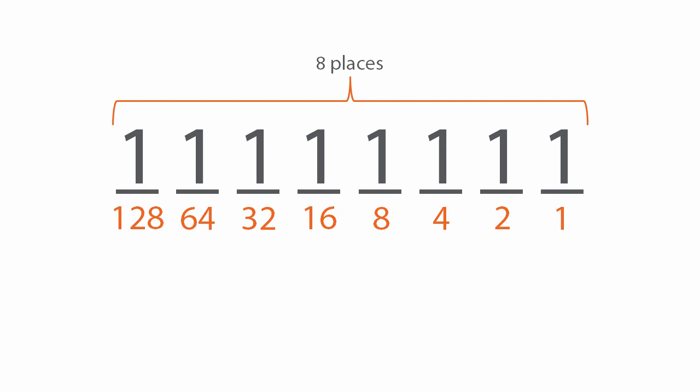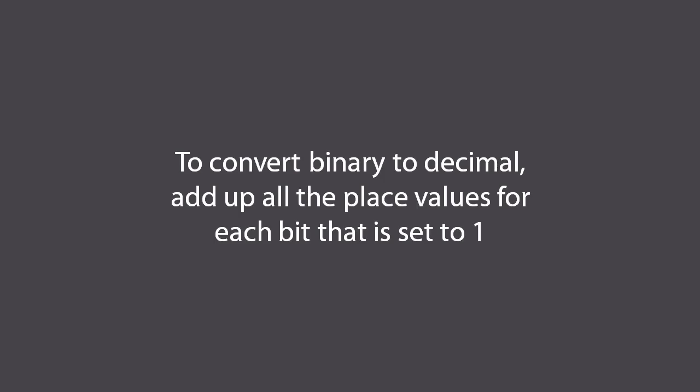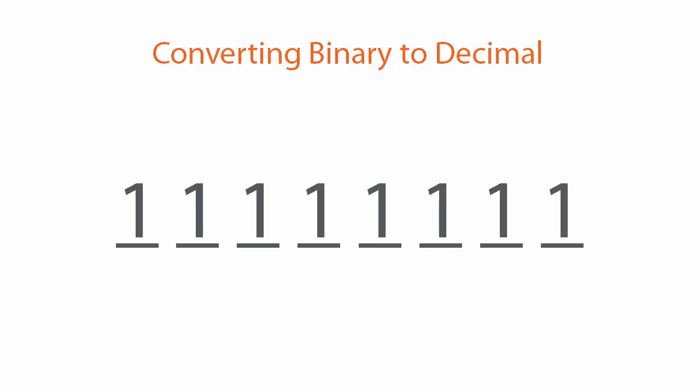How do we use this to convert binary to decimal? All you have to do is add up all of the place values for each bit that is set to 1. Let's take a look at an example. Here we have the binary number 1 1 1 1 1 1 1 1 — eight ones.